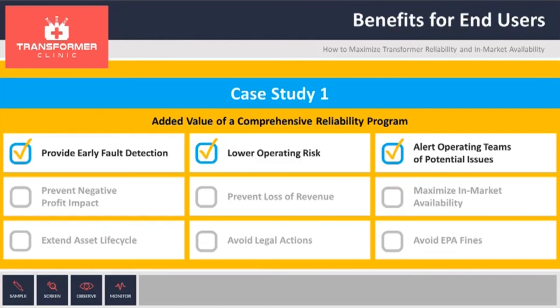Some of the benefits for the end user here were early detection — even when the DGA gassing trend was low, we were still able to pinpoint the location of the source. Once they knew there was a problem on that unit, they actually prevented anybody from getting close to the transformer, therefore increasing safety for the personnel. And they had a plan in place in case there was a failure on the unit.